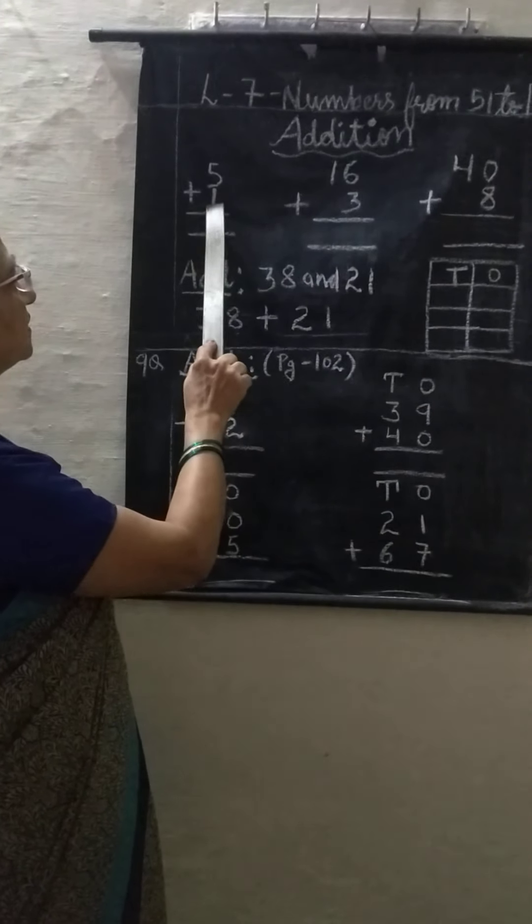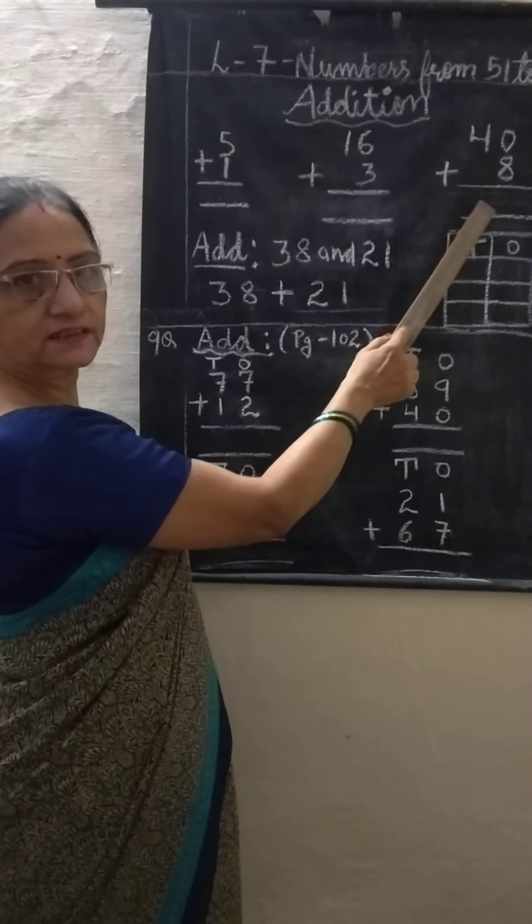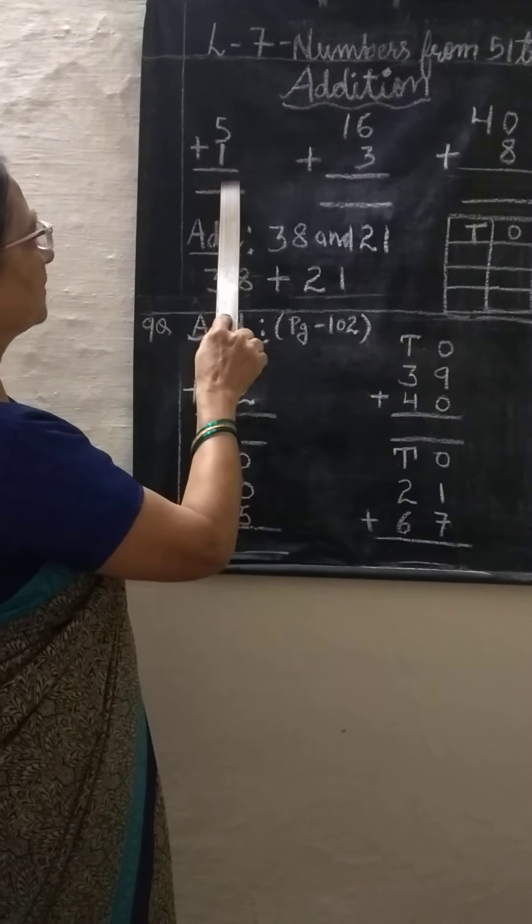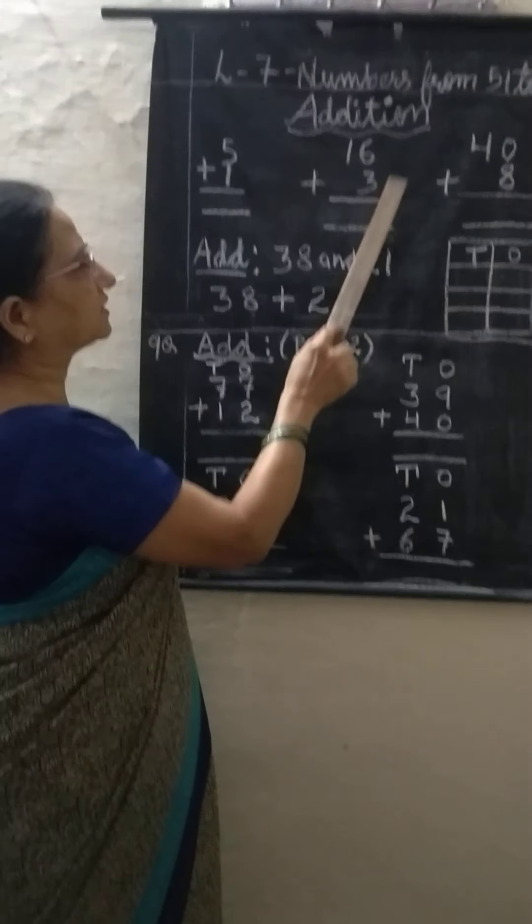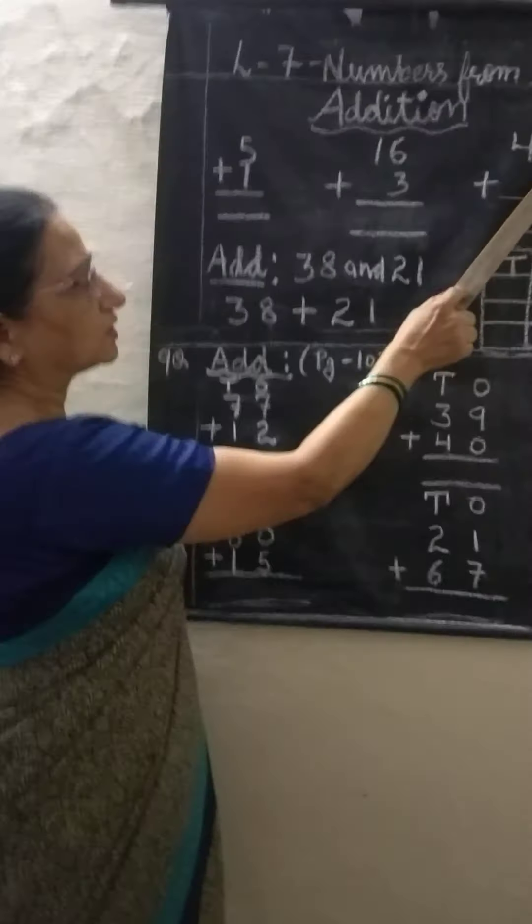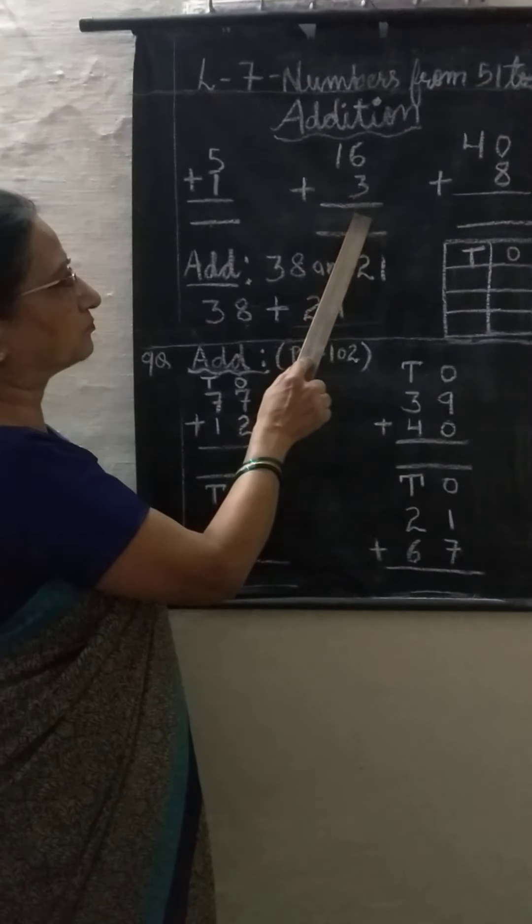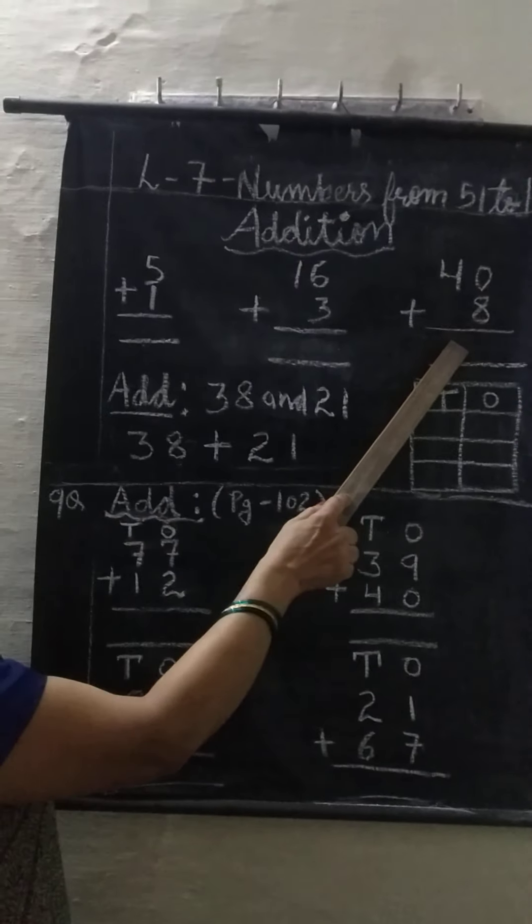Earlier we have done addition in lesson number 3, lesson number 5, and lesson number 6. This is the addition of 1-digit numbers. This is the addition of 2-digit and 1-digit numbers. We have done 2-digit and 1-digit addition in lesson number 5 and lesson number 6.